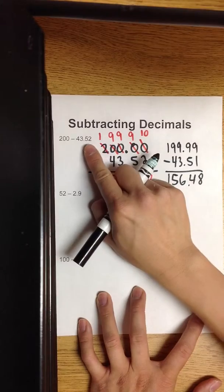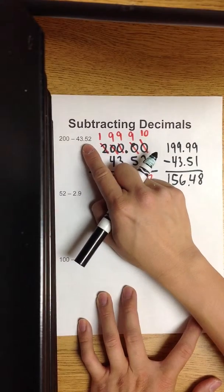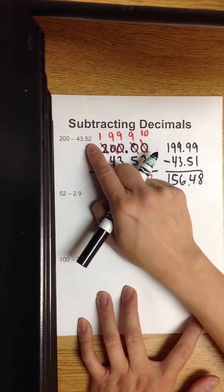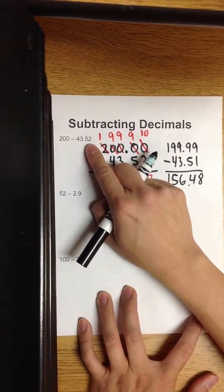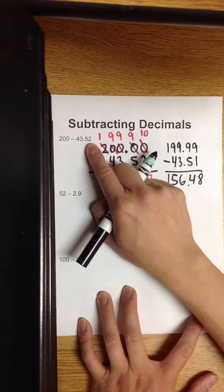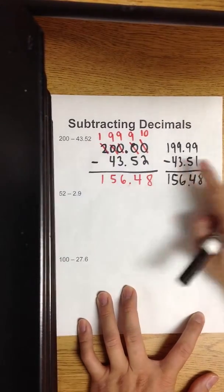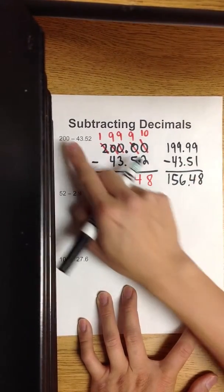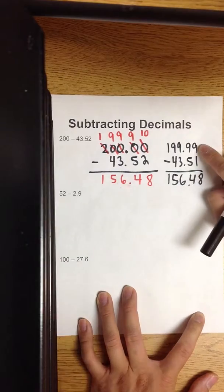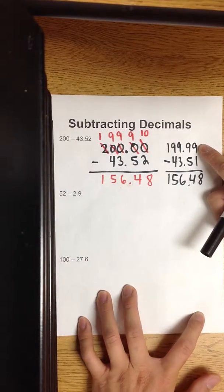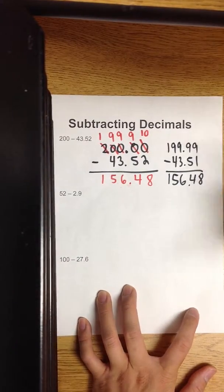In the shortcut, you look at the last place value — hundredths place. You take away one of them from it. So one hundredth from this is 51. One hundredth from 200 is 199 and 99 hundredths.